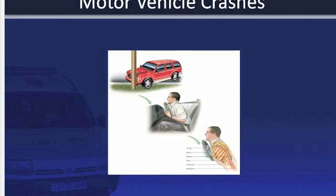In an MVC, three separate impacts occur as kinetic energy is transferred. First, the vehicle strikes an object. Second, the occupant collides with the interior of the vehicle — interior elements include a seatbelt, airbags, and dashboard. Third, internal organs collide with other organs, muscles, bones, or other structures inside the body. The lungs, brain, liver, and spleen are particularly vulnerable to trauma. A fourth impact may occur if loose objects in the vehicle become projectiles.